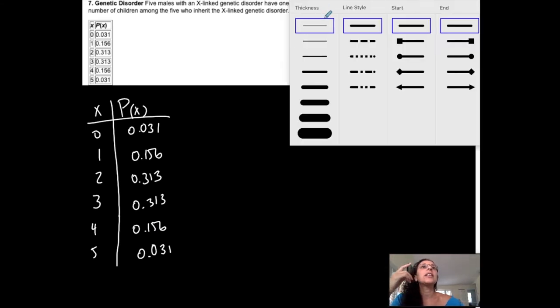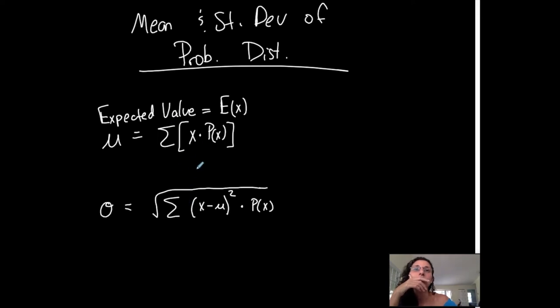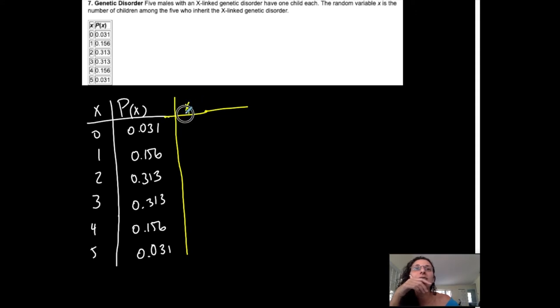What makes this calculation easier is to extend the table. So what does this mean? Let's start with the mean. X times P of X. I need to take each random variable and multiply it by its corresponding probability. So 0 times 0.031, 1 times 0.156, 2 times 0.313. I'm not going to write that for every single one. Know what the notation means. Understand what the notation means.